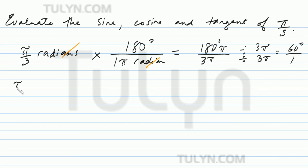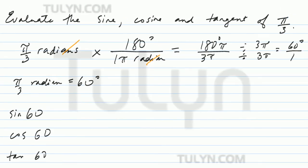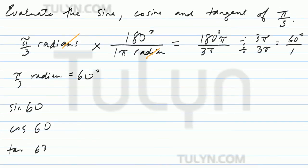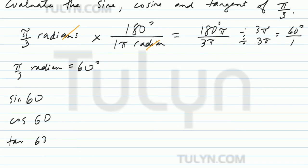So pi over 3 radians is equal to 60 degrees. So we're going to find sine of 60, cosine of 60, and tan of 60. Notice that I'm using the abbreviations. Sin is an abbreviation of sine, cos is an abbreviation of cosine, tan is an abbreviation of tangent.